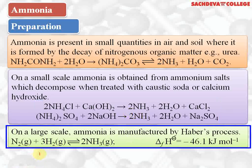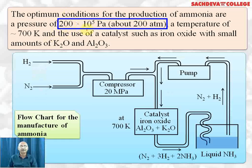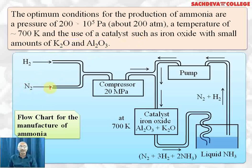On a large scale, ammonia can be obtained by the Haber process. The optimum conditions for production of ammonia are: a pressure of 200 × 10⁵ Pascals (about 200 atmospheres) and a temperature of approximately 700 Kelvin. These days we use a catalyst of iron oxide with small amounts of K₂O and aluminum oxide. Nitrogen from air and hydrogen, usually obtained from heavy water plants, are used.